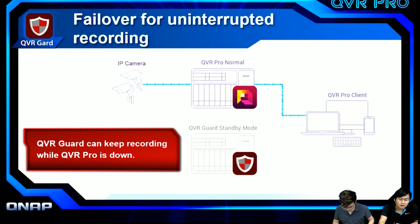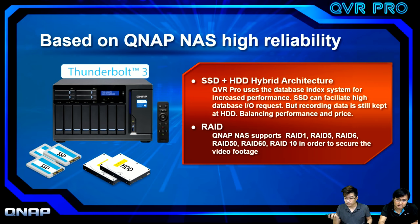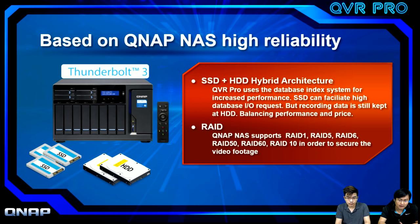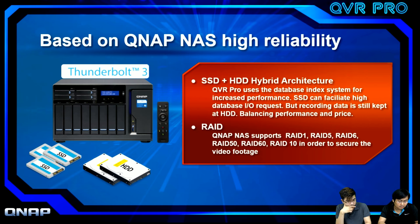QVR Guard can keep recording even if the primary NAS encounters issues such as HDD failure, network disconnection, or power shutdown. As a NAS-based service app, we benefit from QNAP's storage functions. First is SSD plus HDD hybrid architecture — QVR Pro uses a database index system to improve recording and playback performance. SSDs handle high database I/O requests, while recording data is stored on HDDs, balancing performance and cost.